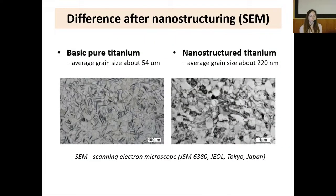On this slide, you can see the difference between basic pure titanium and nanostructured titanium. The main difference is in average grain size: basic pure titanium has an average grain size of about 54 micrometers, while nanostructured titanium has an average grain size of about 220 nanometers.